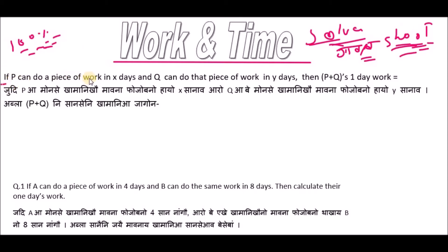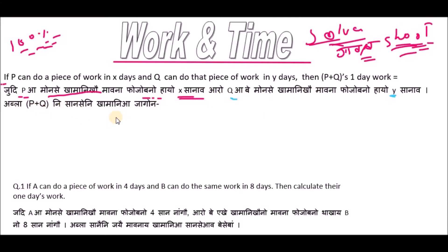If P can do a piece of work in X days and Q can do that in Y days, then P plus Q's one day's work is one over X plus one over Y.